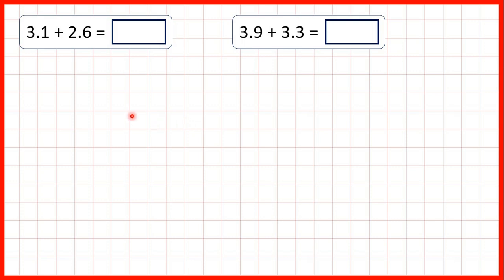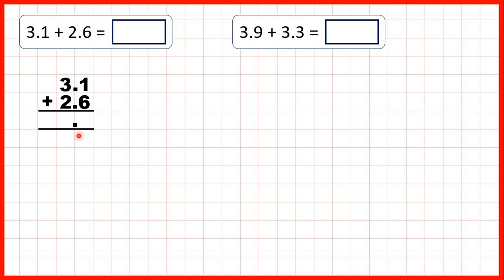In these questions we're adding decimals with tenths. First we have 3.1 plus 2.6. We can set this out as a column addition, making sure that our decimal points are lined up, because if our decimal points are lined up then our ones and our tenths place value columns will be lined up as well. It's really important that we copy the decimal point down into our answer straight away so that we don't forget. Now we use column addition working from right to left, starting by adding our tenths. 1 plus 6 is 7, and then 3 plus 2 is 5, so our answer is 5.7.